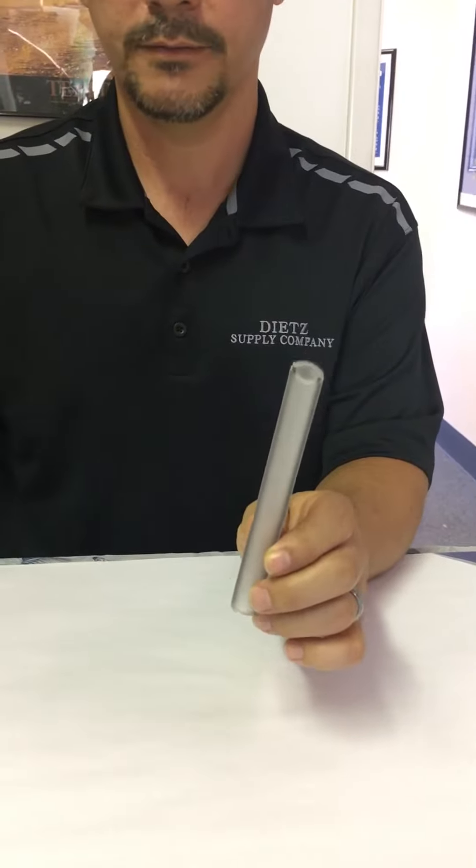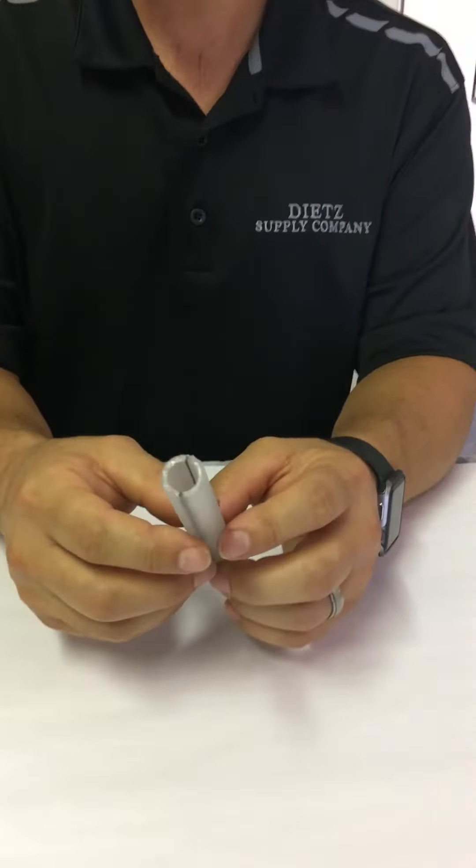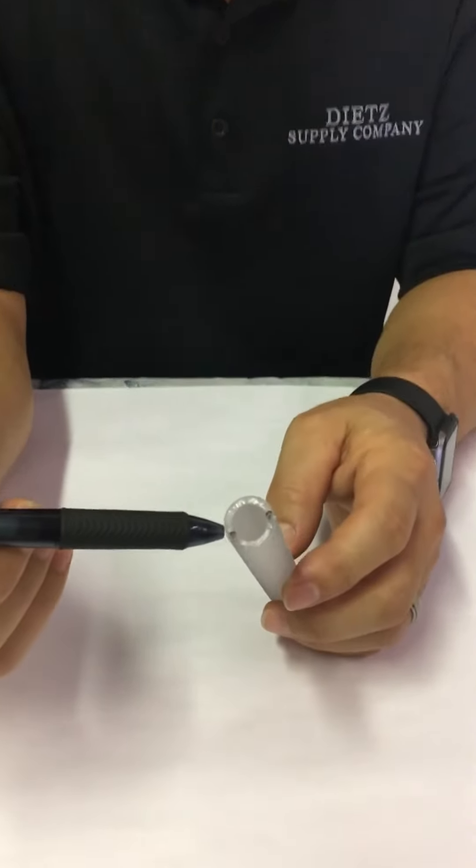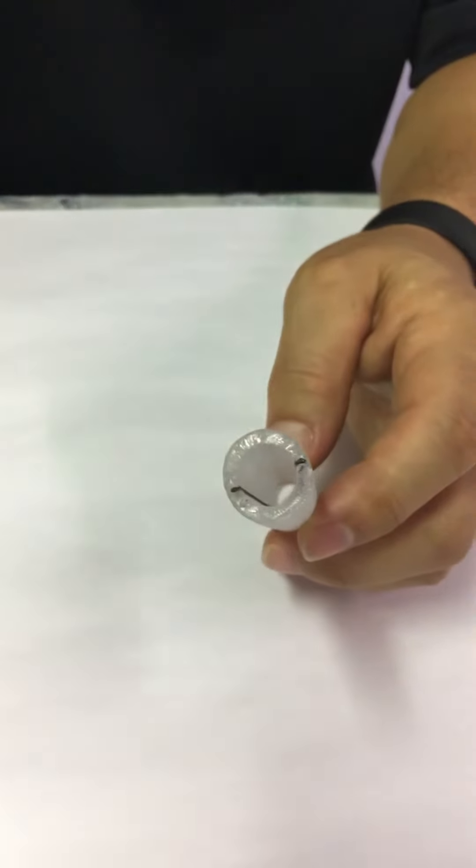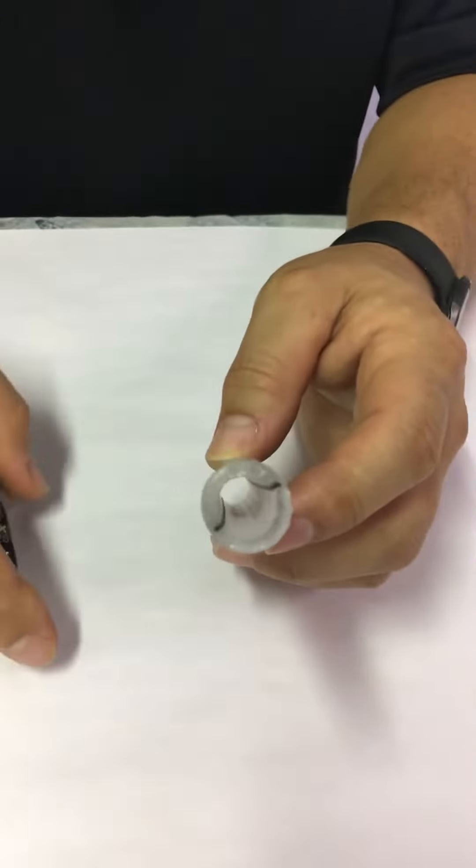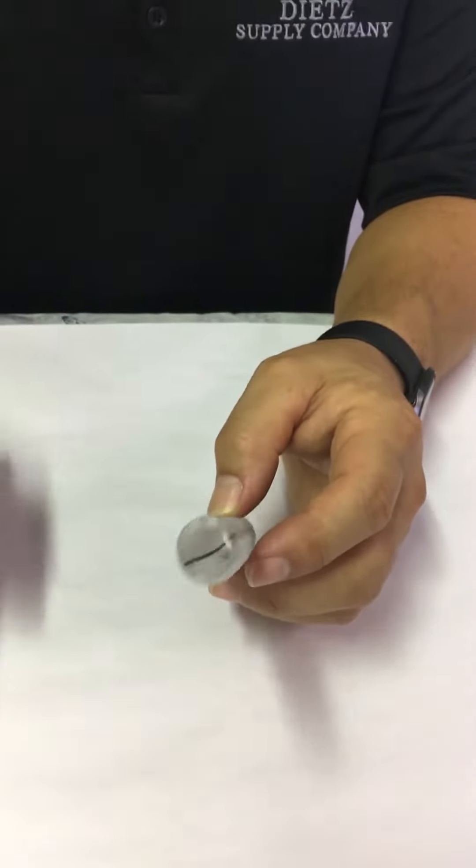As you can see down inside of it here, we have two little filaments that dissipate any tribo charge built up inside the gun. The material it's made of now is very efficient for cleaning.